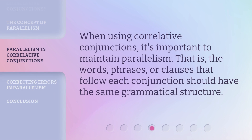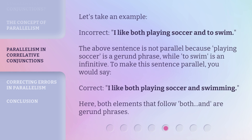When using correlative conjunctions, it's important to maintain parallelism. That is, the words, phrases, or clauses that follow each conjunction should have the same grammatical structure. Let's take an example. Incorrect: I like both playing soccer and to swim. The above sentence is not parallel because 'playing soccer' is a gerund phrase, while 'to swim' is an infinitive. To make this sentence parallel, you would say — Correct: I like both playing soccer and swimming. Here, both elements that follow 'both' and 'and' are gerund phrases.